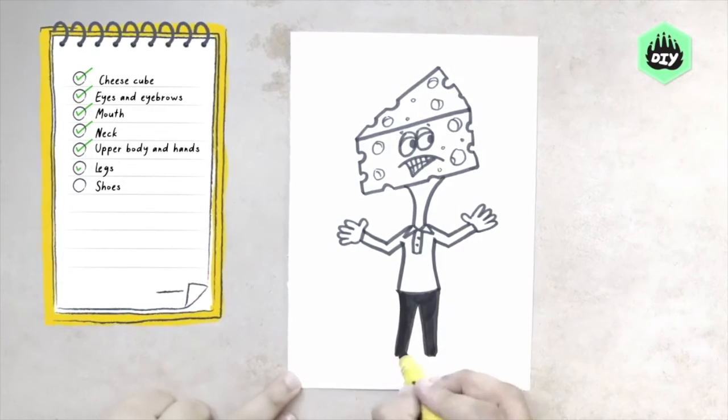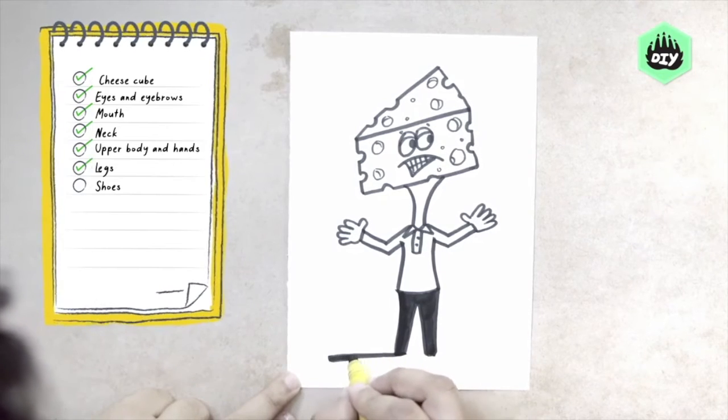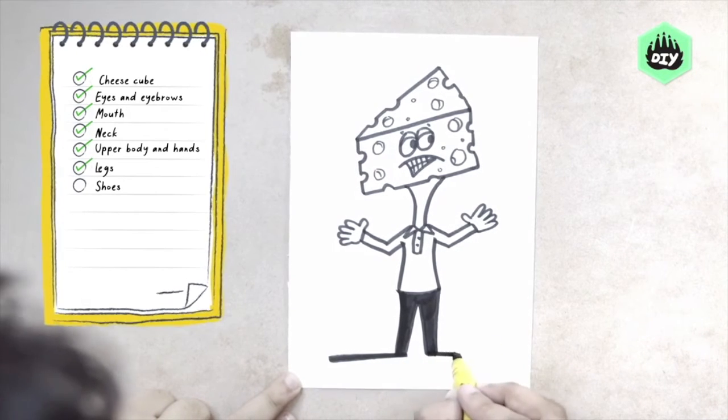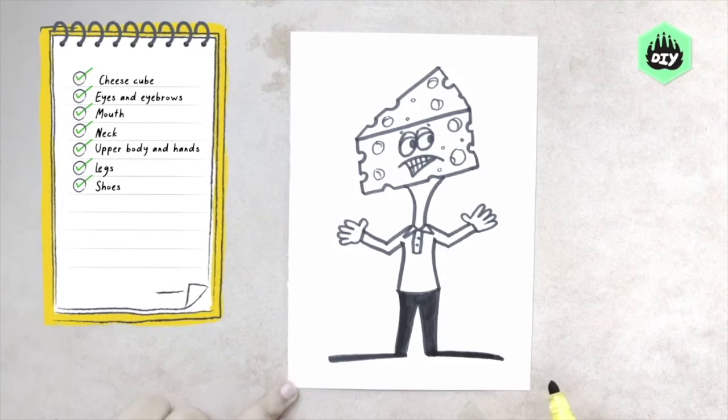Color it black. We give this character extremely long shoes. And that's our cheese block looking like a human figure.